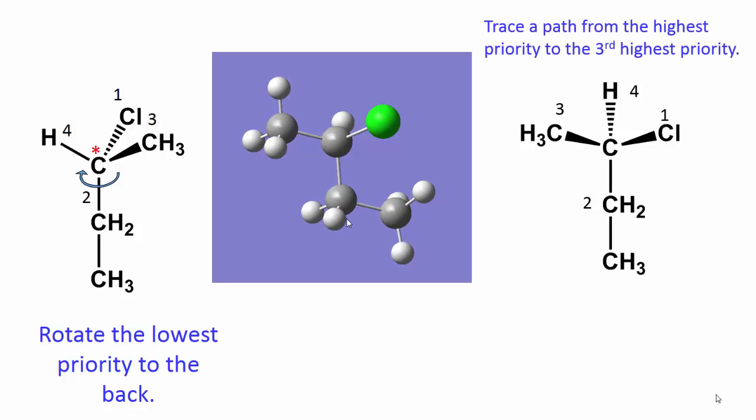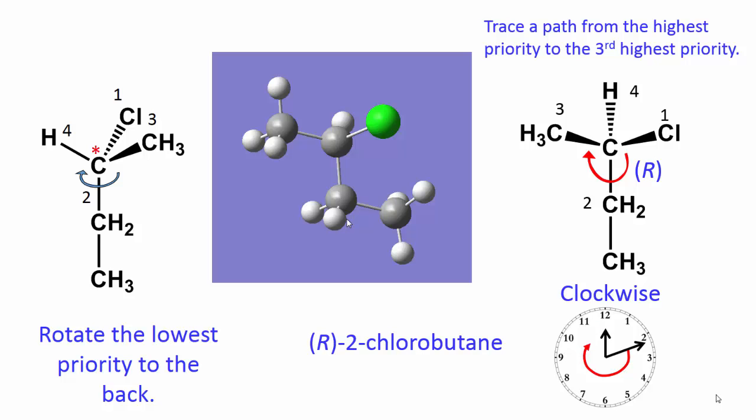Trace a path from the highest priority to the third highest priority. The path is clockwise. The configuration of this molecule is R.